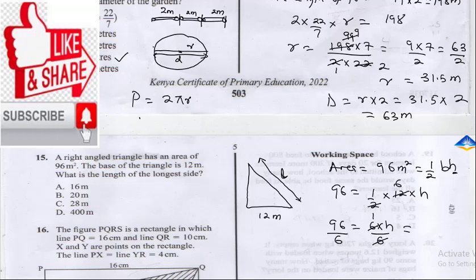96 divided by 6: 6 into 9 gives 1, and 6 into 36 gives 6. So h equals 16. Having established that, this height is 16 meters.